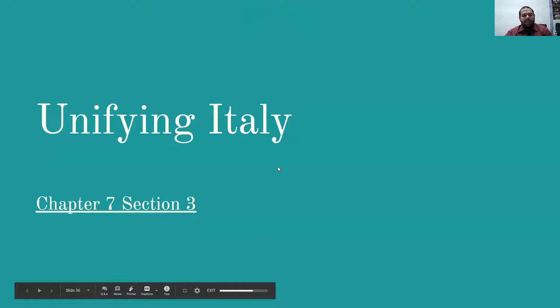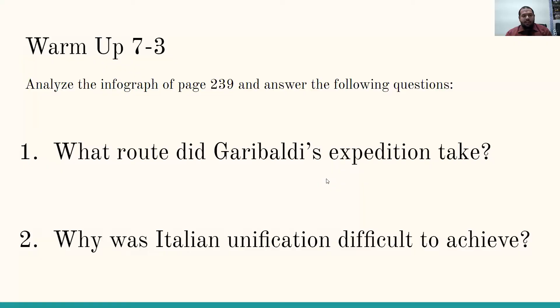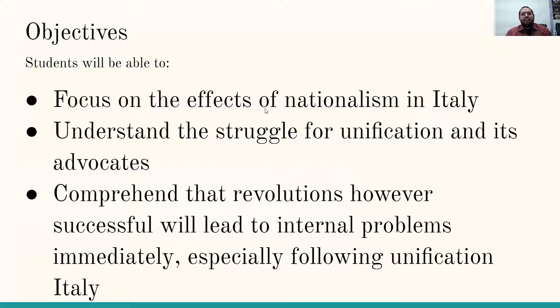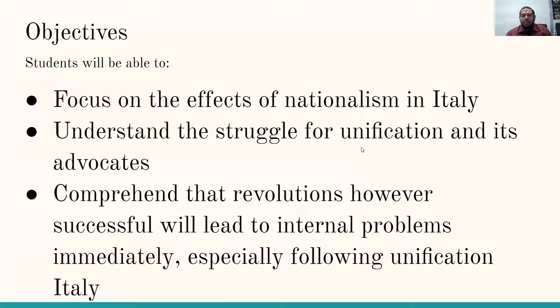Unifying Italy, Chapter 7, Section 3. We're halfway through this chapter's sections, and it's about more nationalism. The objectives: we're going to focus on the effects of nationalism in Italy, understand the struggle for unification and its advocates, and comprehend that revolutions, however successful, will lead to internal problems immediately, especially following unification of Italy.